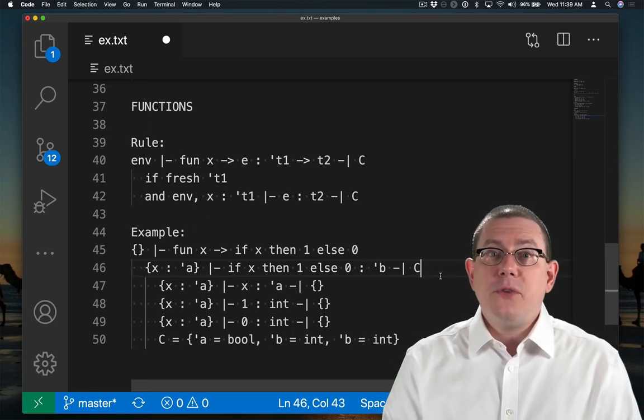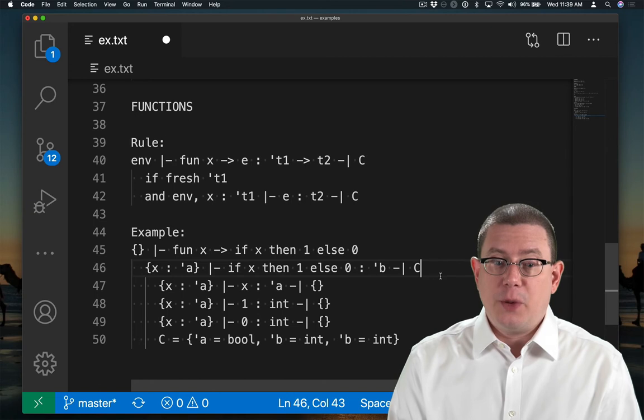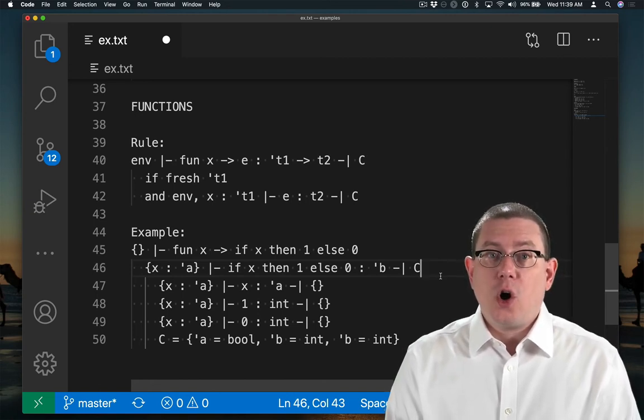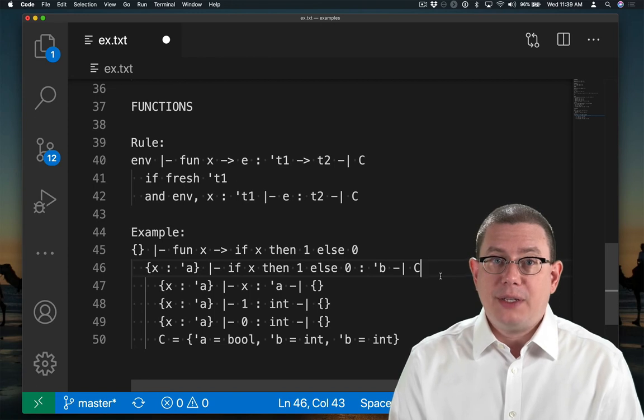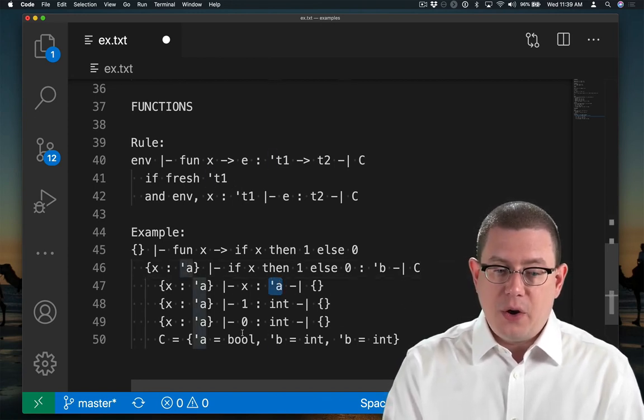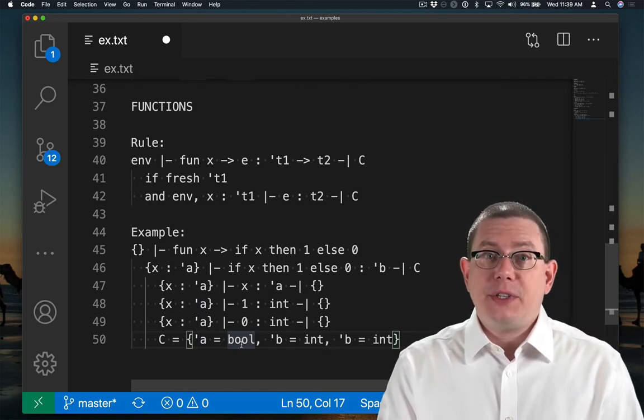We give the if expression a type beta, which is a fresh type variable here that we've introduced. And we record the constraints that the guard must have type that is equal to bool. So that means recording that alpha from here equals bool. And that the two branches have the same type.